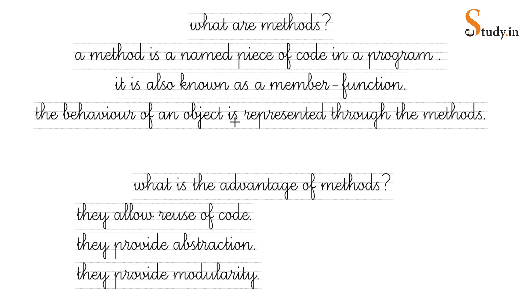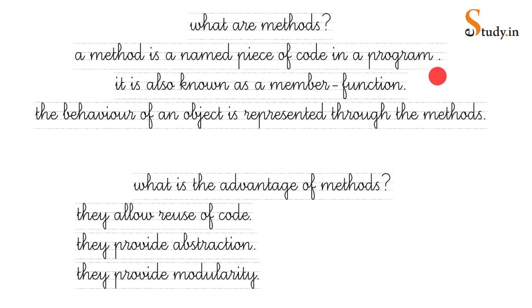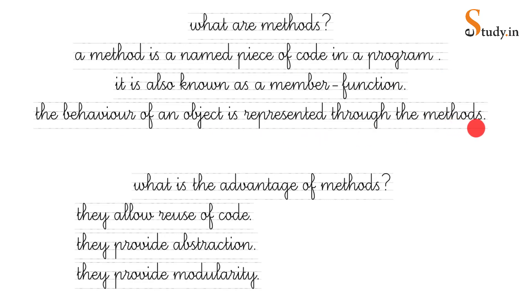The first thing we are going to understand is what are methods. A method is a named piece of code in a program. It is also known as a member function, and the behavior of an object is represented through methods. You can use whichever definition you are comfortable with.